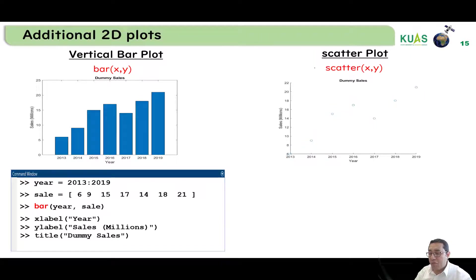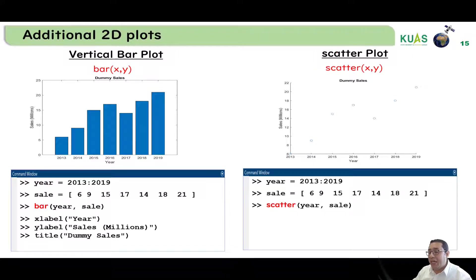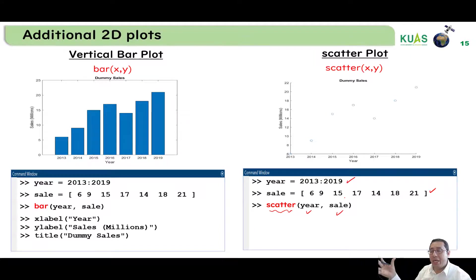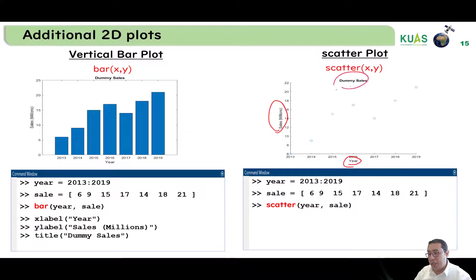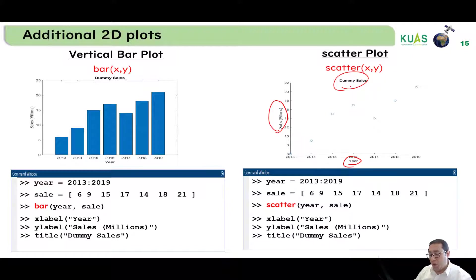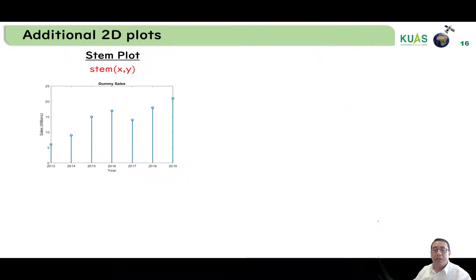The scatter plot has the general form: scatter(x, y). If x and y are vectors they should have the same length, for example six elements each. To create a scatter plot it is very similar to the bar — we have years and sales, and just write scatter(year, sale). We can then add xlabel equal to 'year', ylabel equal to 'sales by millions', and title as 'dummy sales'.